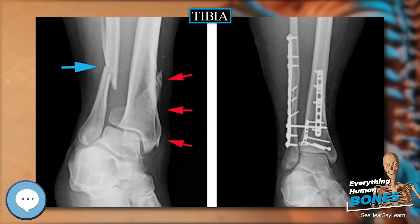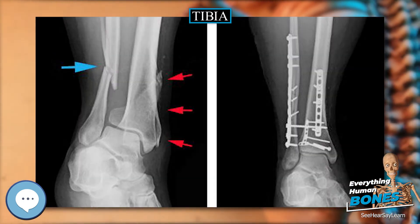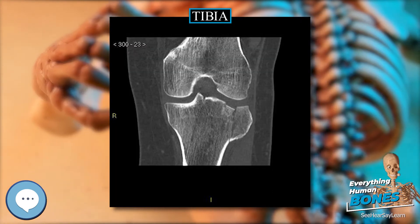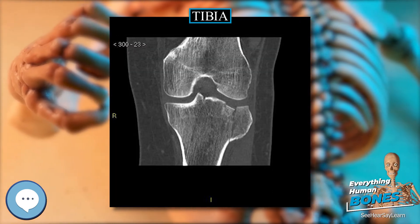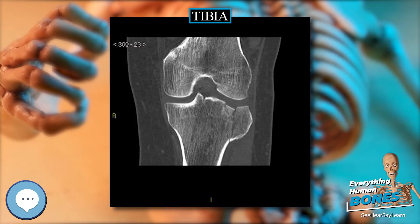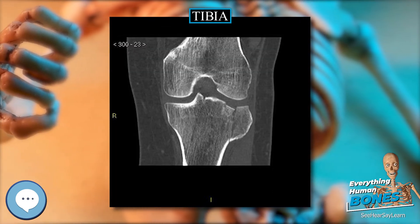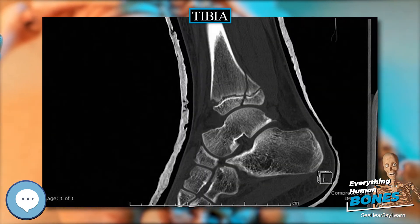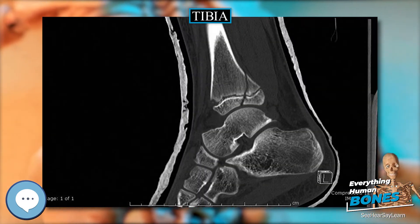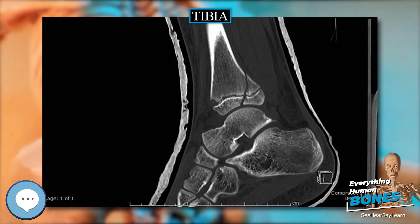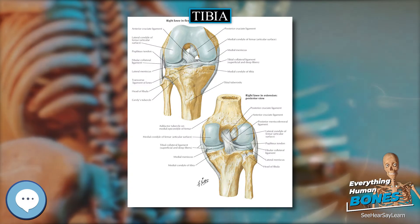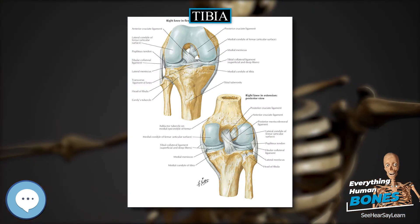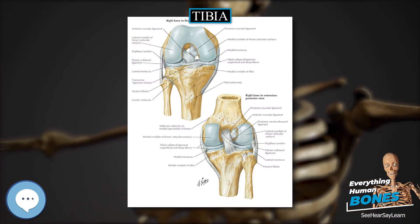Surfaces. The inferior articular surface is quadrilateral and smooth for articulation with the talus. It is concave from before backward, broader in front than behind, and traversed from before backward by a slight elevation, separating two depressions. It is continuous with that on the medial malleolus.